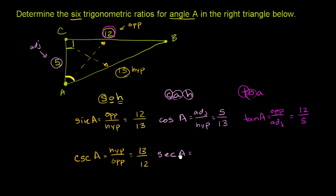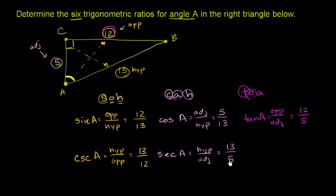Secant of A is the reciprocal of cosine. Instead of adjacent over hypotenuse, it's hypotenuse over adjacent. The hypotenuse is 13 and the adjacent side is 5, so secant of A is 13 fifths — which is the reciprocal of cosine of A, which was 5 thirteenths.